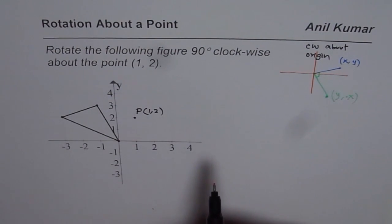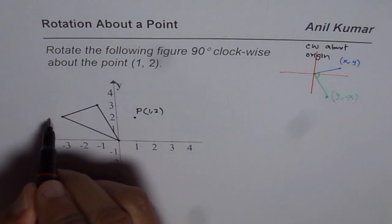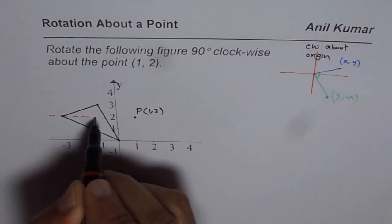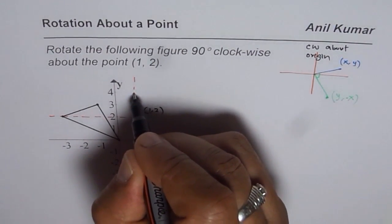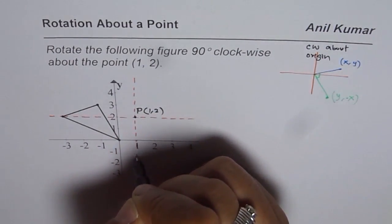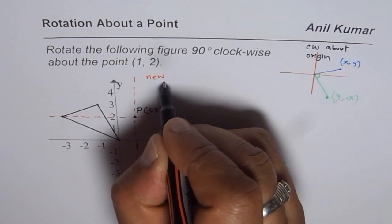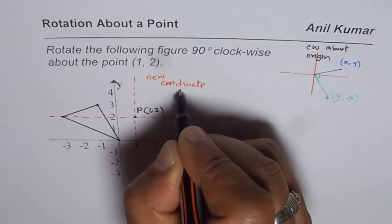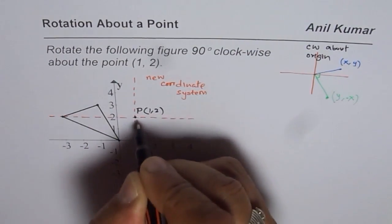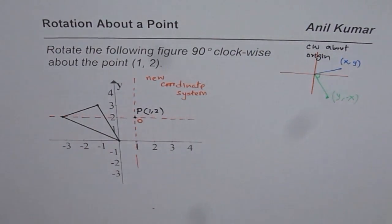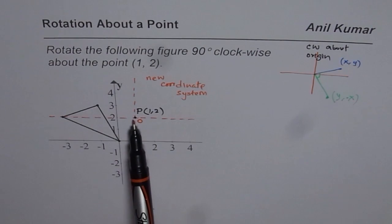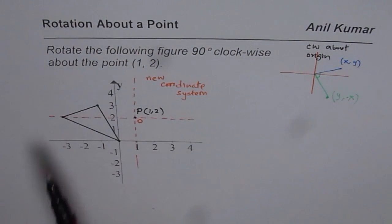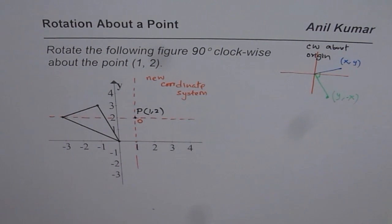The easiest way to do it is to think about P as the origin itself. In that case we have a new coordinate system. If I change the coordinate system so that P becomes the new origin, that becomes my new coordinate system. Based on this coordinate system, whose origin is on the point of rotation, we will find all the coordinates.